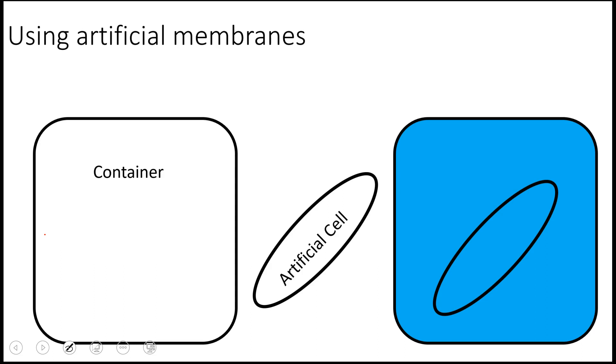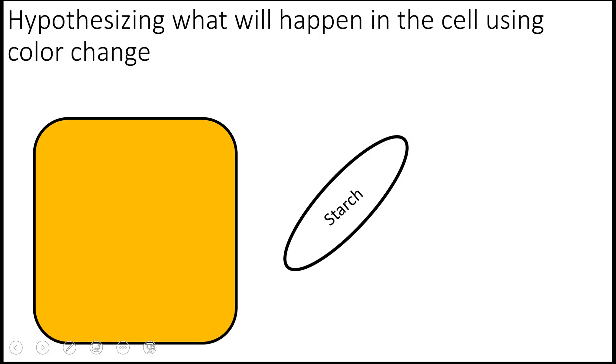So there are some rules to these artificial membranes, but basically we're going to take those cells and put them into a container containing some type of solution and use this setup to make hypotheses about diffusion and osmosis in this setup.